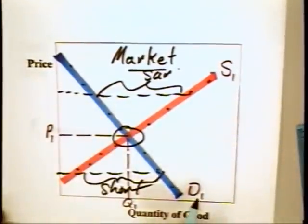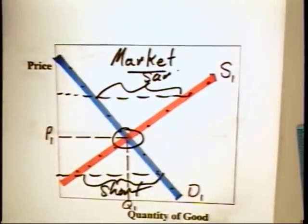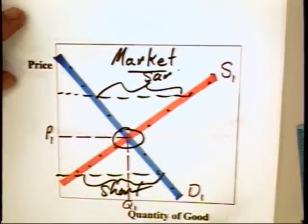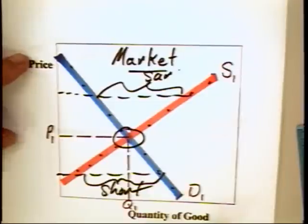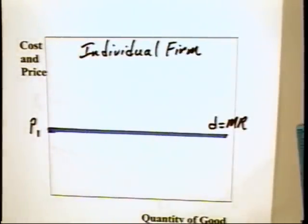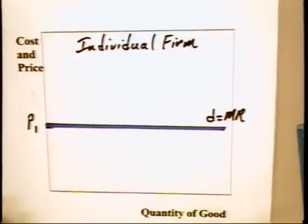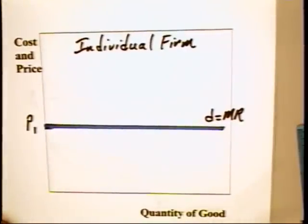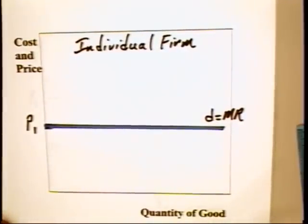The price is set at P1. The individual producer must accept or reject that price. The individual perfect competitor is a price taker. The demand curve facing the individual producer looks like this. That is, it is perfectly horizontal. It is perfectly elastic.